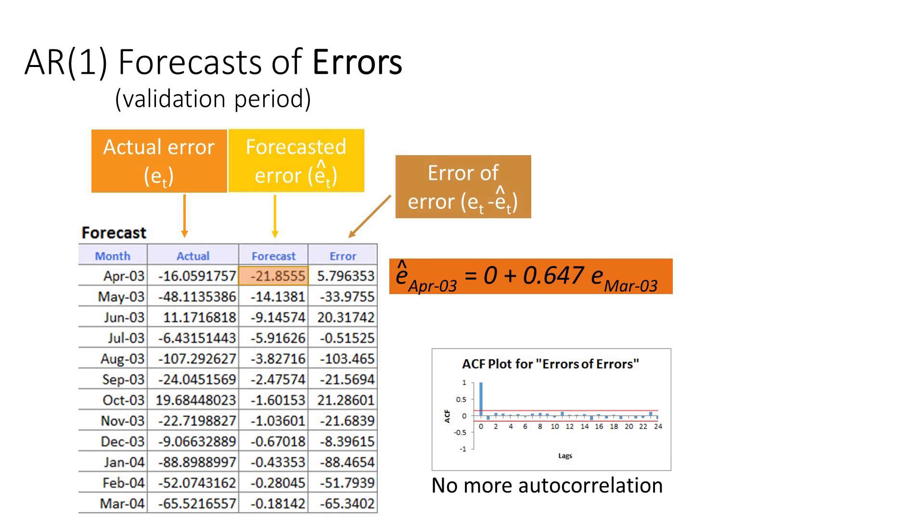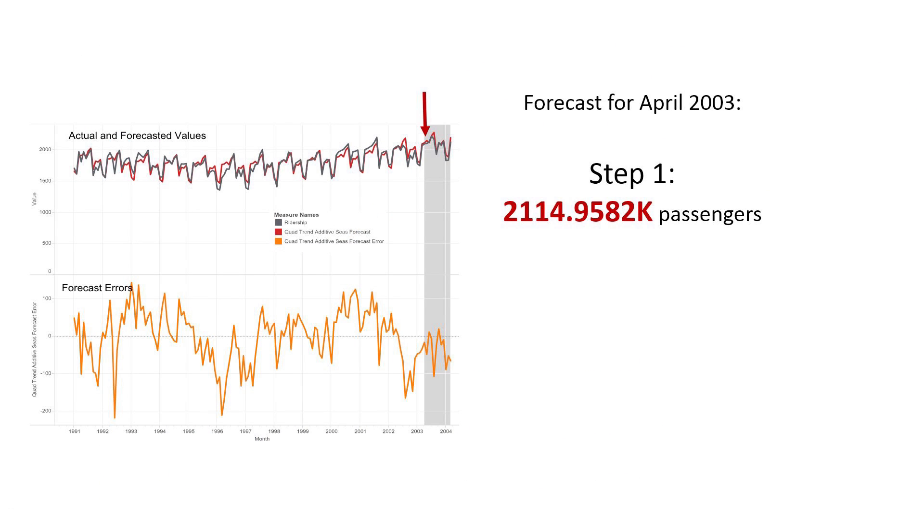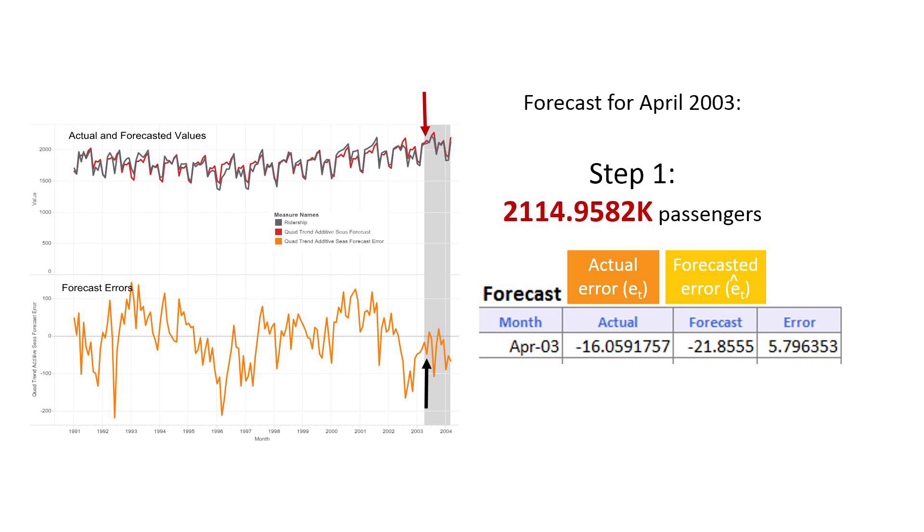If we'd have any autocorrelation here, we might revise step two with a different AR(p) model. The main question now is how do we use this information to improve the step one forecasts. Let's recall again what we have. We started with a linear regression in step one to capture trend and seasonality, and we got a forecast of 2.115 million passengers in April 2003. Then we used the series of errors and modeled it with an AR(1). This gave us a forecasted error of negative 21.86 thousand passengers. Now we can combine the two forecasts and get our improved forecasts for April 2003. We adjust the 2.115 forecast by adding the projected forecast error of negative 21.85. This yields an improved forecast of 2.093 million passengers. Notice the large difference between the original and improved forecasts. This gap can be significant for decision-making purposes.